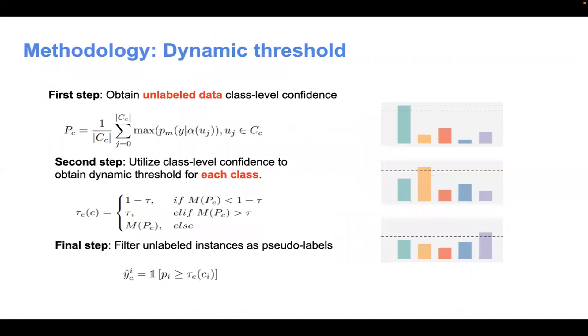The first part is the dynamic threshold. First, we obtain unlabeled data class-level confidence. Then, we use the class-level confidence to obtain a dynamic threshold for each class. Finally, we use the dynamic threshold to filter unlabeled data instances as pseudo labels.